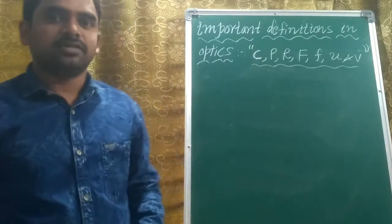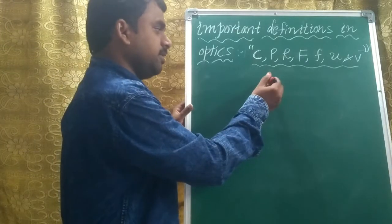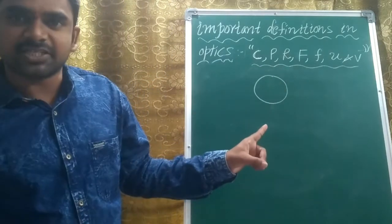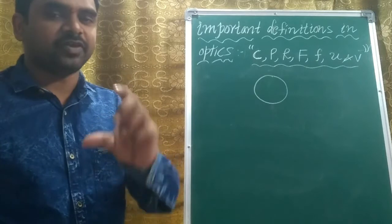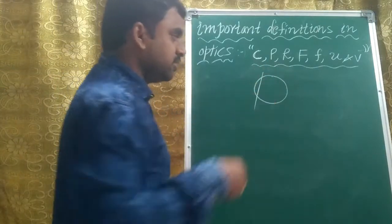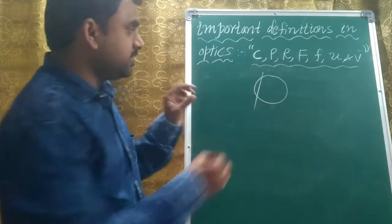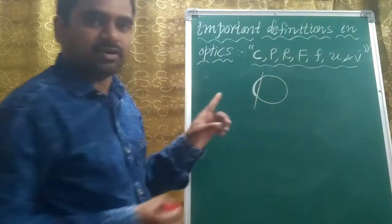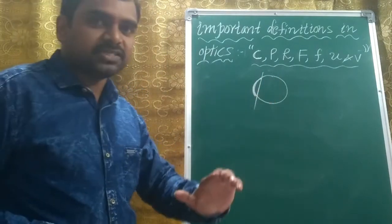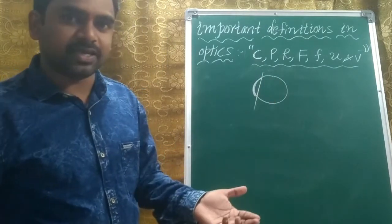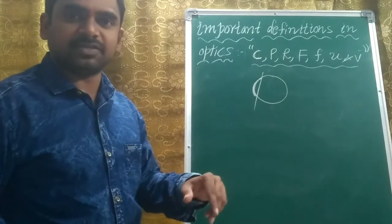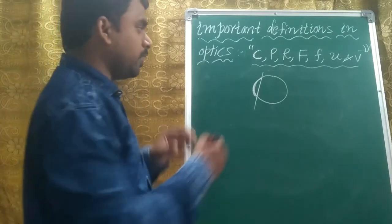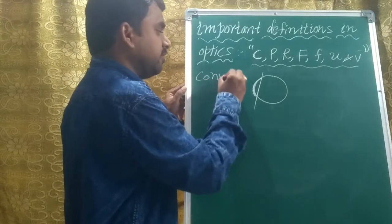To understand this, we have to take a sphere — that means a spherical shape. From that spherical shape, suppose if you take an arc, like this, this is called a curved surface. Based on the reflecting area, curved surfaces are divided into two parts: one is convex and another one is concave.